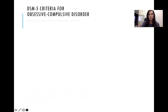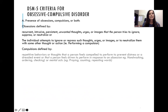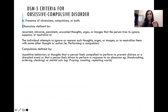The DSM-5 criteria for obsessive-compulsive disorder: Criterion A is the presence of obsessions, compulsions, or both. Obsessions are defined by recurrent, intrusive, persistent, unwanted thoughts, urges, or images that the person tries to ignore, suppress, or neutralize.